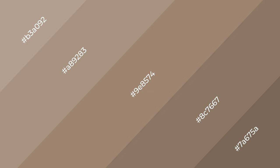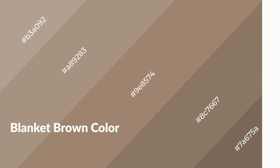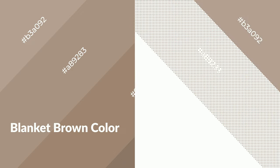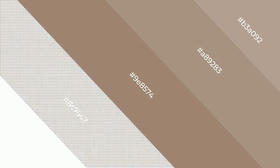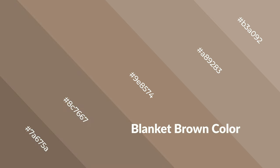Blanket brown is a warm color and it emits cozier and active emotions. Warm colors are symbols of warmth, fire, heat, and sunshine. It also evokes joy, passion, love, and even anger. You can see warm colors used in restaurants and gyms.